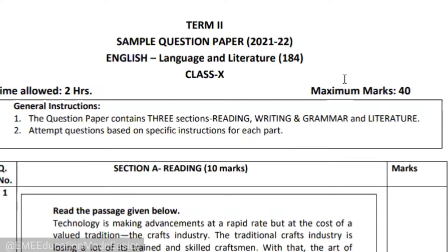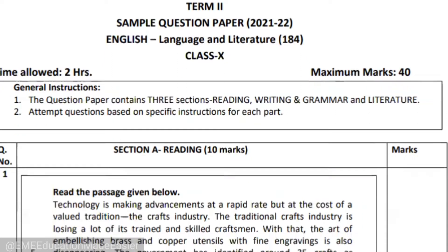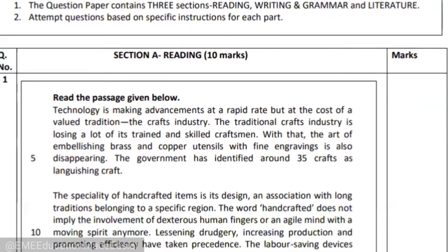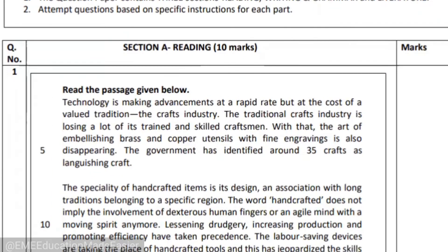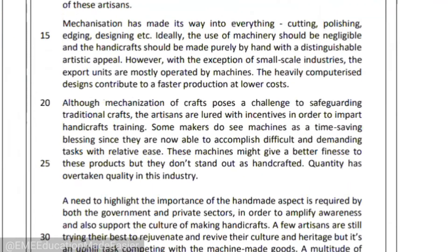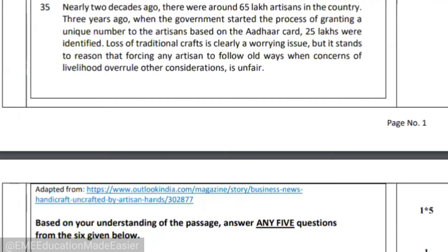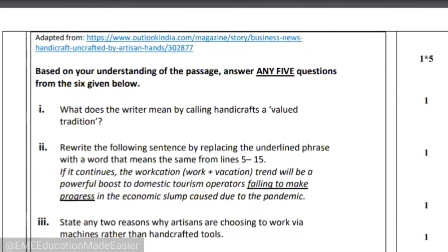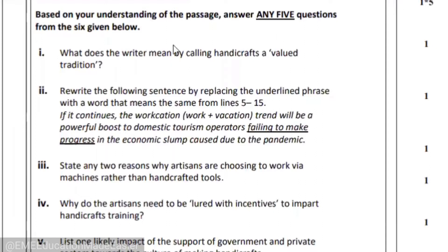Now, what kind of questions are you going to get? The maximum marks are again 40, but this time because it is going to be a subjective paper, it is going to be a bit different. When you scroll down, you'll see that first of all you'll get an unseen passage. On scrolling down you would see that it has six questions. There is no MCQ pattern, so you'll have to write the answers on the basis of your understanding of the passage.